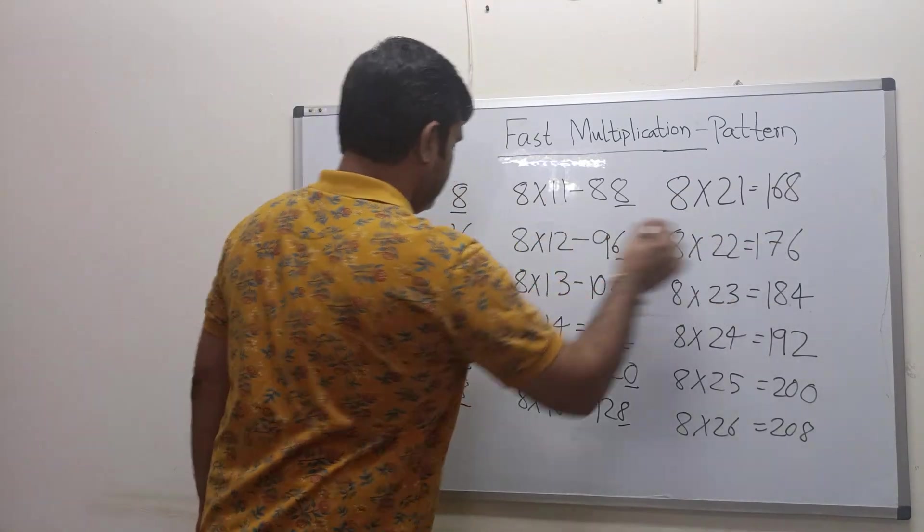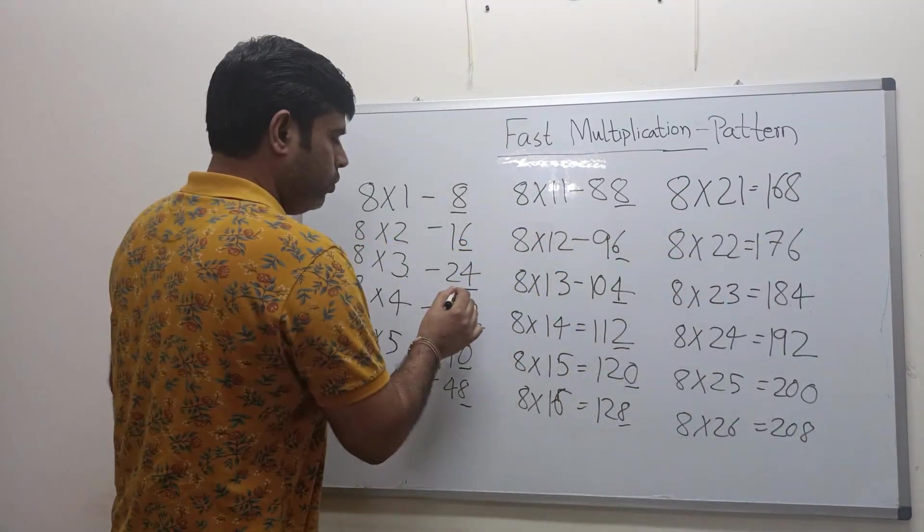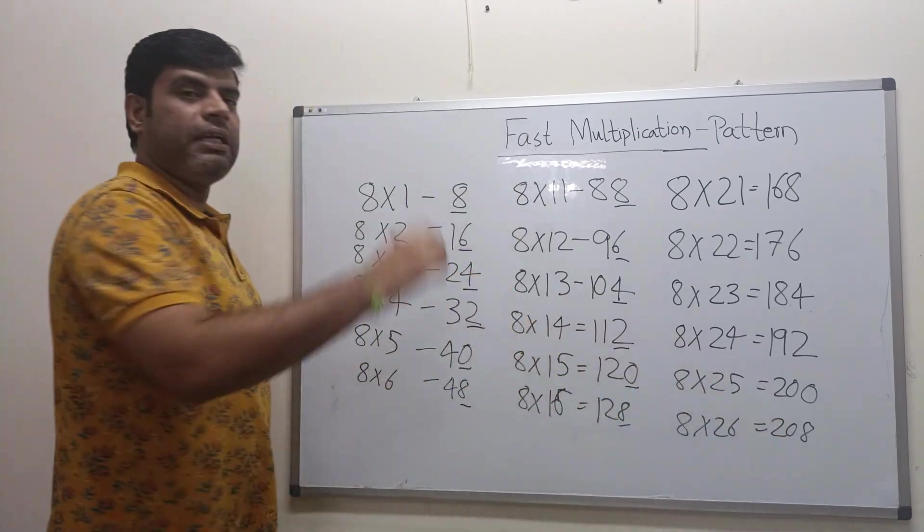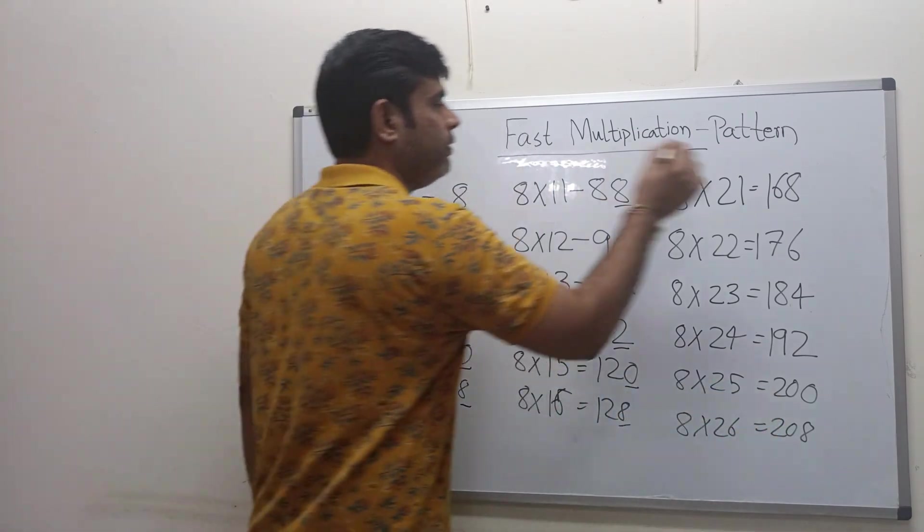You can see ones digit is same: 8, 8, 6, 6, 4, 4, 2, 2, 0, 0, 8, 8.